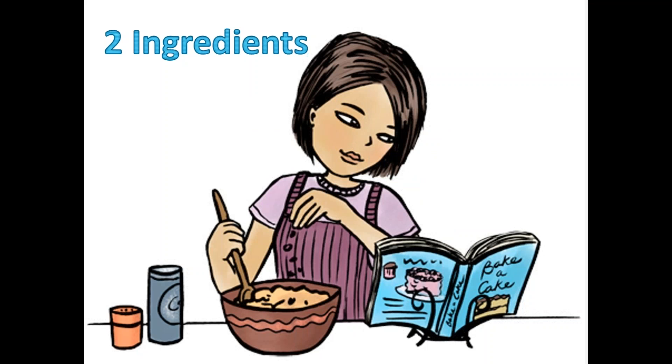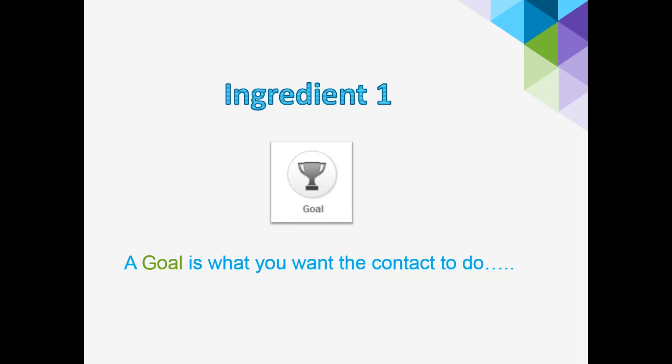With the Infusionsoft campaign builder, there are two main ingredients you need to know in order to build a campaign. When you're baking you need sugar, flour, and eggs — something to hold it together. With Infusionsoft there are just two ingredients: the first is a goal. A goal is what you want the contact to do — every campaign starts with a goal, and it's what you want them to achieve.